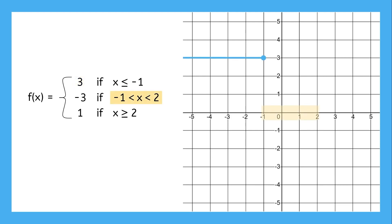For the next piece, between negative 1 and 2, we can see that it doesn't include exactly negative 1 or 2, so there's going to be an open point for both at negative 3. The final interval is everything 2 and above, and the output for this interval is 1. So this step function looks like this. The output will always be 3, negative 3, or 1, depending on which interval the input falls into.